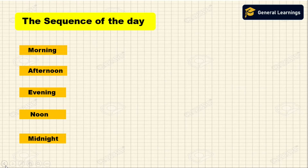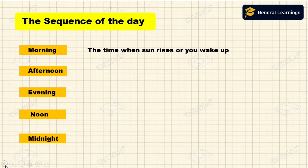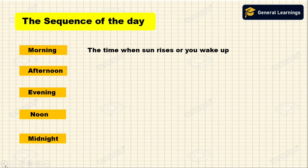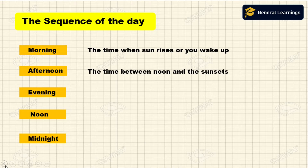First, we will see the sequence of the day. In a day there will be morning, afternoon, evening, noon, and midnight. Morning is the time when the sun rises or you wake up — that means the time between 12 o'clock at night and 12 o'clock in the middle of the day.